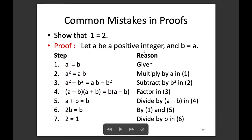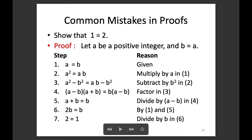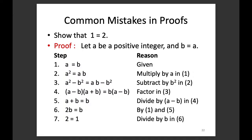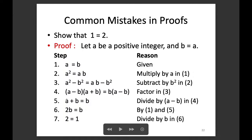We let A be a positive integer and B equal to A. Multiplying both sides by A gives A² = AB. Subtracting B² from both sides gives A² − B² = AB − B². Factoring: (A−B)(A+B) = B(A−B). Dividing both sides by (A−B) gives A + B = B. Since A = B, substituting gives 2B = B, and so 2 = 1.